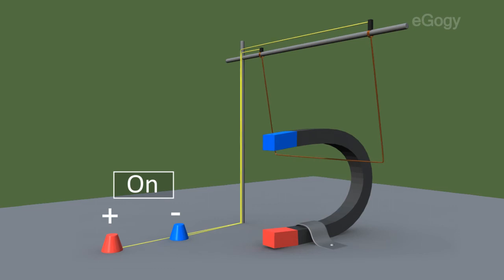Now look, the conductor moves to one side. If we change the direction of flow of current, the conductor moves to opposite direction also.